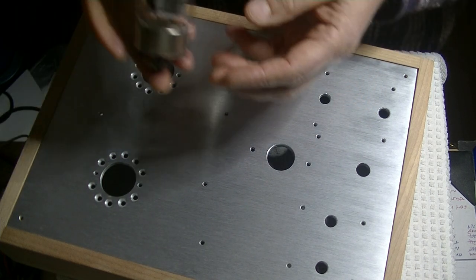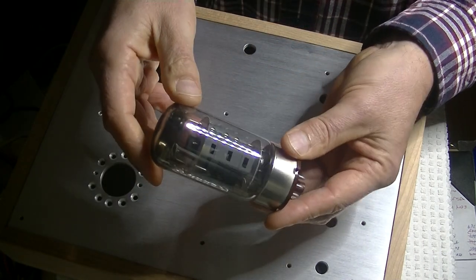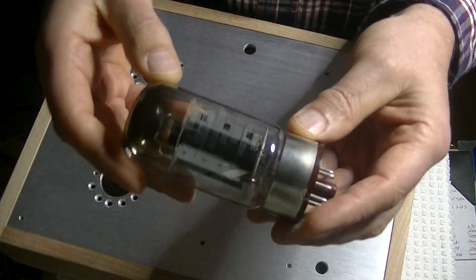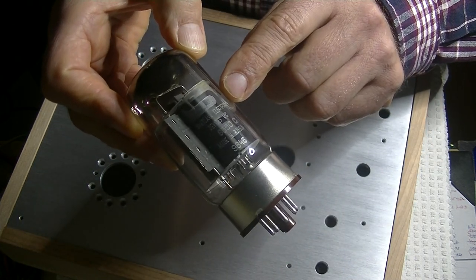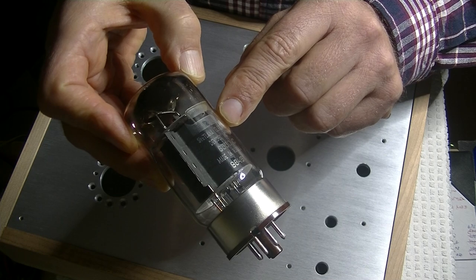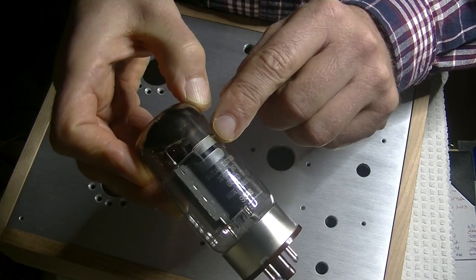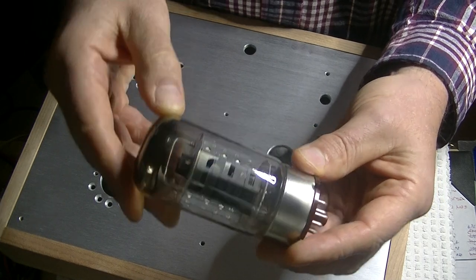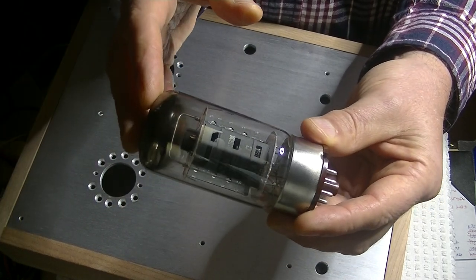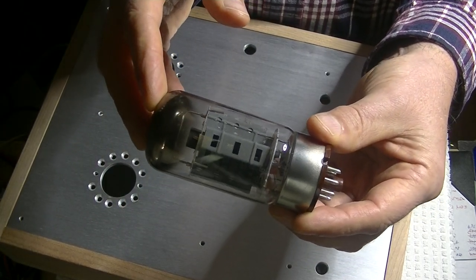And a case of one of my favorite power tubes came in. Let me see if I can get it up close so you can see the label. Can you see that? Svetlana Electron Devices, Inc. with the big stylized S. These are the 6550 power tubes. It's a lower-powered version of a KT88. They look very much like a KT88.